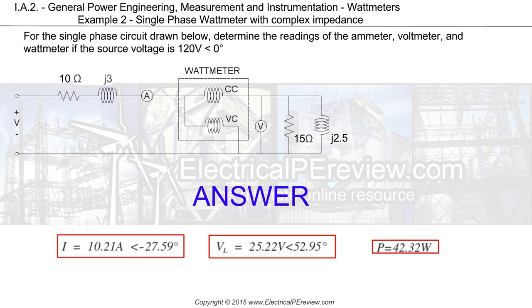There you have it. Our three answers are: current of 10.21 amps at -27.59 degrees, voltage of 25.22 volts at 52.95 degrees, and power of 42.32 watts as measured by our wattmeter.